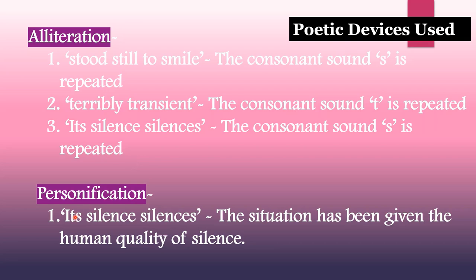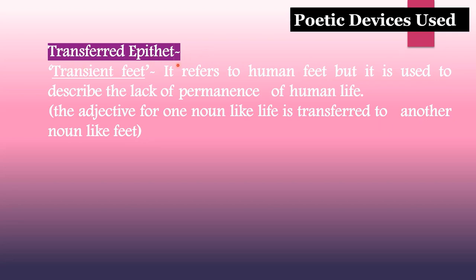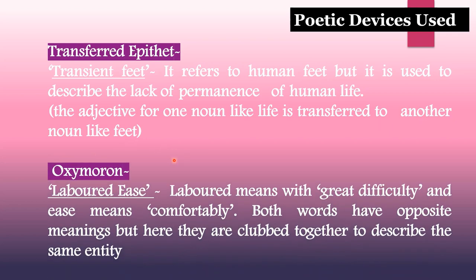'Its silence silences' is also a clear case of personification, because the situation has been given the human quality of silence. Moving on to transferred epithet — 'transient feet' is a very good example, referring to human feet but used to describe the lack of permanence of human life. The adjective for one noun like 'life' is transferred to another noun like 'feet.' The last figure of speech is oxymoron — 'labored ease,' where 'labored' means with great difficulty and 'ease' means comfortably. Both words have opposite meanings but are clubbed together to describe the same entity of loss, making it a clear case of oxymoron.